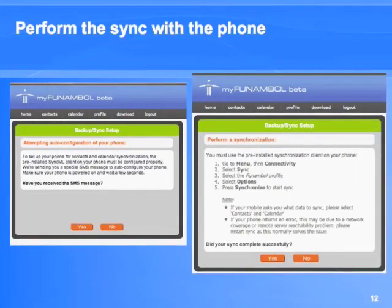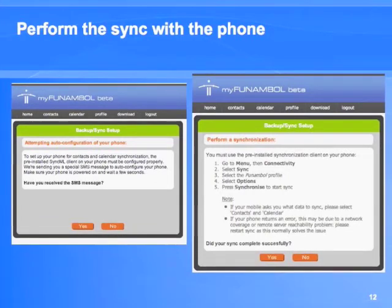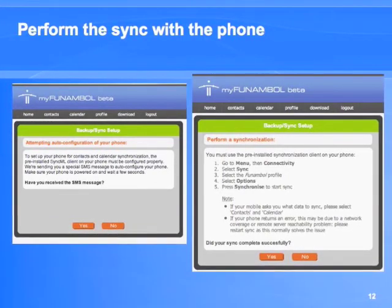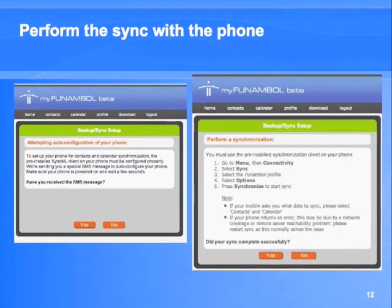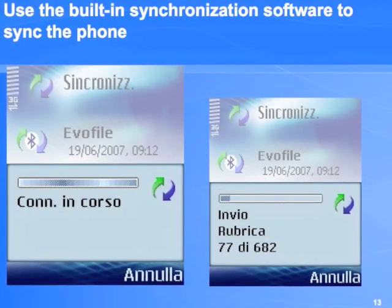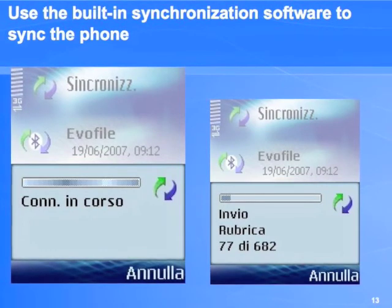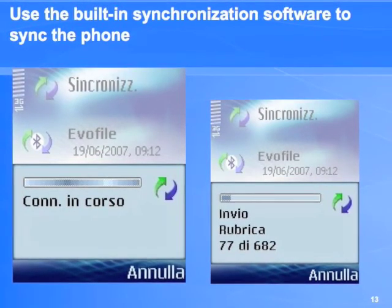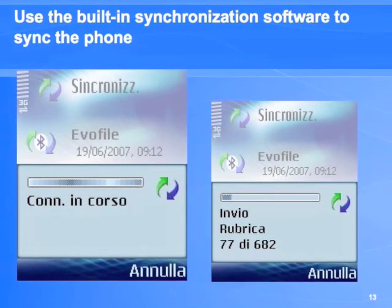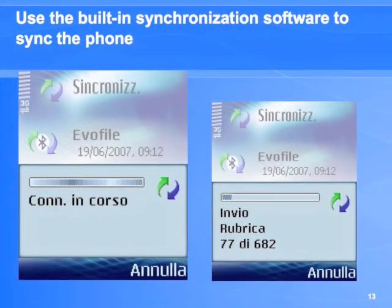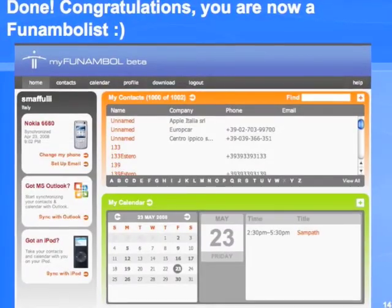The portal wizard will tell you where the sync application is. If you haven't moved it from the default it should be in the connectivity group, so you can launch it and select the sync profile that the phone has just received via SMS from the portal. Connect to the internet, choose the correct access point for the flat fee data plan, and start synchronizing the address book, the notes and the agenda.